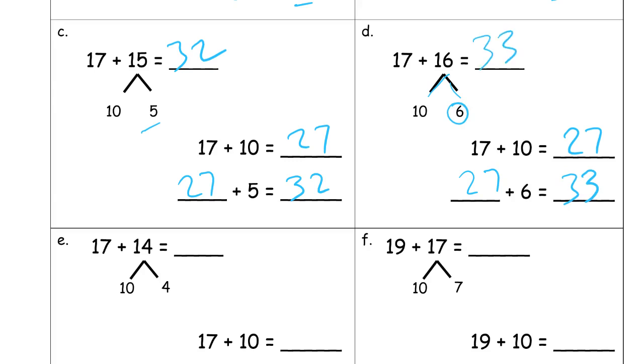Which you might have guessed, because 17 plus 15 was 32. 16 is one more, so our total should be one more.